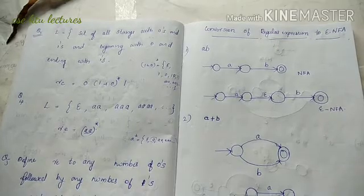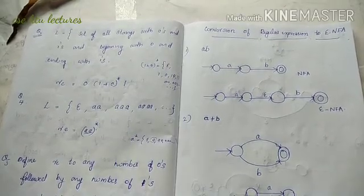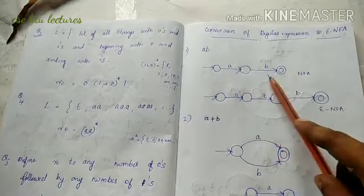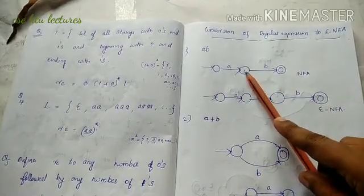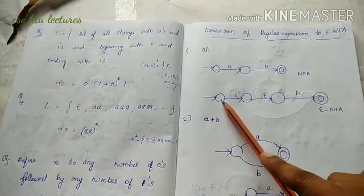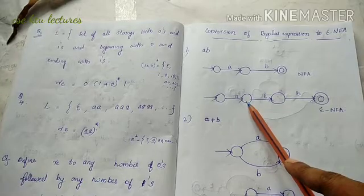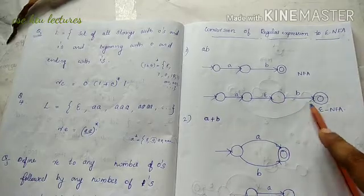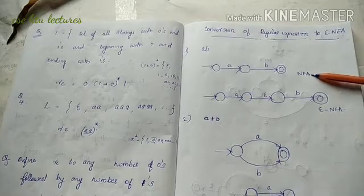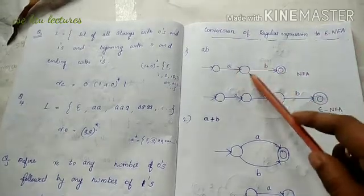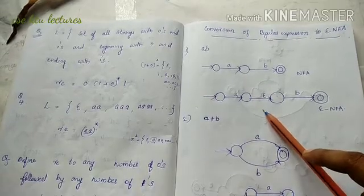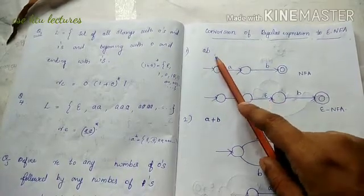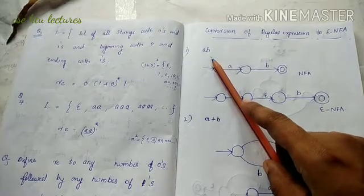This is an NFA, and now we convert it to an Epsilon-NFA. This is very easy — we have to introduce Epsilon transitions. If you have A followed by B continuously in the same state, we add an Epsilon transition. So in the same state, A followed by B gives us the Epsilon-NFA. That is: A and B, where B is followed by A, represented with Epsilon.